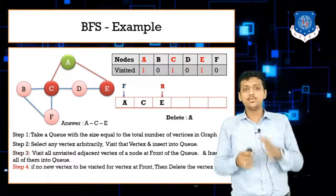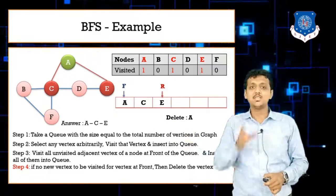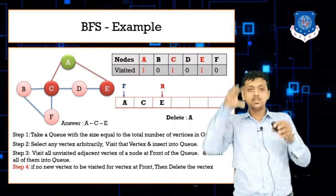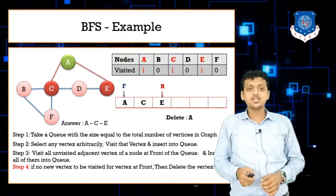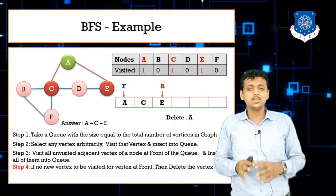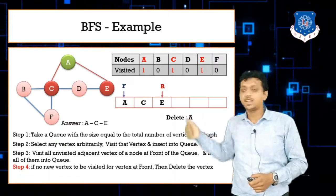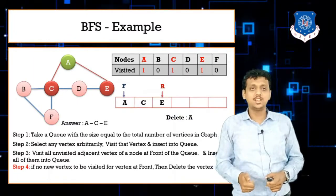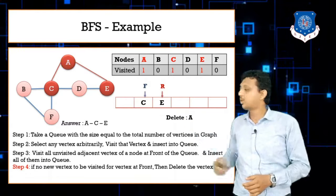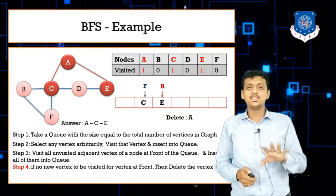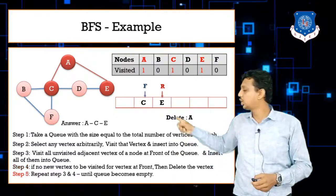This visiting order — A, then C, then E — is breadth first search: visit a node, then all its adjacent nodes at that level. Step four: since node A has no remaining unvisited adjacent nodes, we delete A from the queue. The front pointer now moves to C. We then repeat steps three and four.